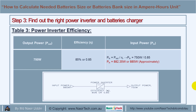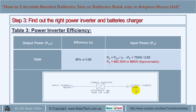Step 3: Find the right power inverter and battery charger. According to our previous calculation, we require 750 watts output from our power inverter. Most electrical devices have power loss; let's consider our power inverter has 85 percent efficiency. Using the formula: Input power equals Output power divided by Efficiency, so 750 watts divided by 0.85 gives approximately 885 watts input requirement for this power inverter.